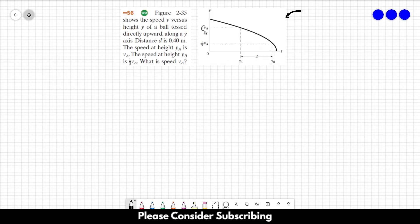So we want to know the value of VA. We are tossing a ball upwards, so the ball is under the influence of gravity. The acceleration of gravity is constant.